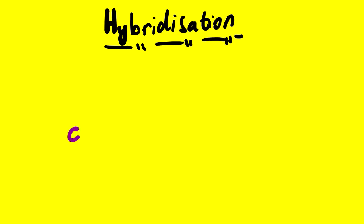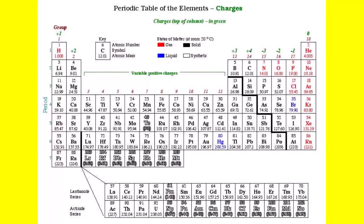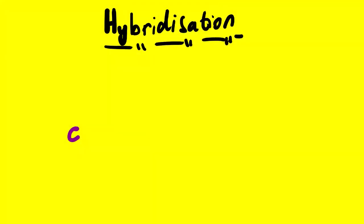Before we can get to hybridization, we have to touch on the Lewis dot diagram a bit in order for us to understand it well. Now let us focus on carbon. Carbon is in group number four and it is element number six. The atomic number of six tells us something about the electrons and the protons.